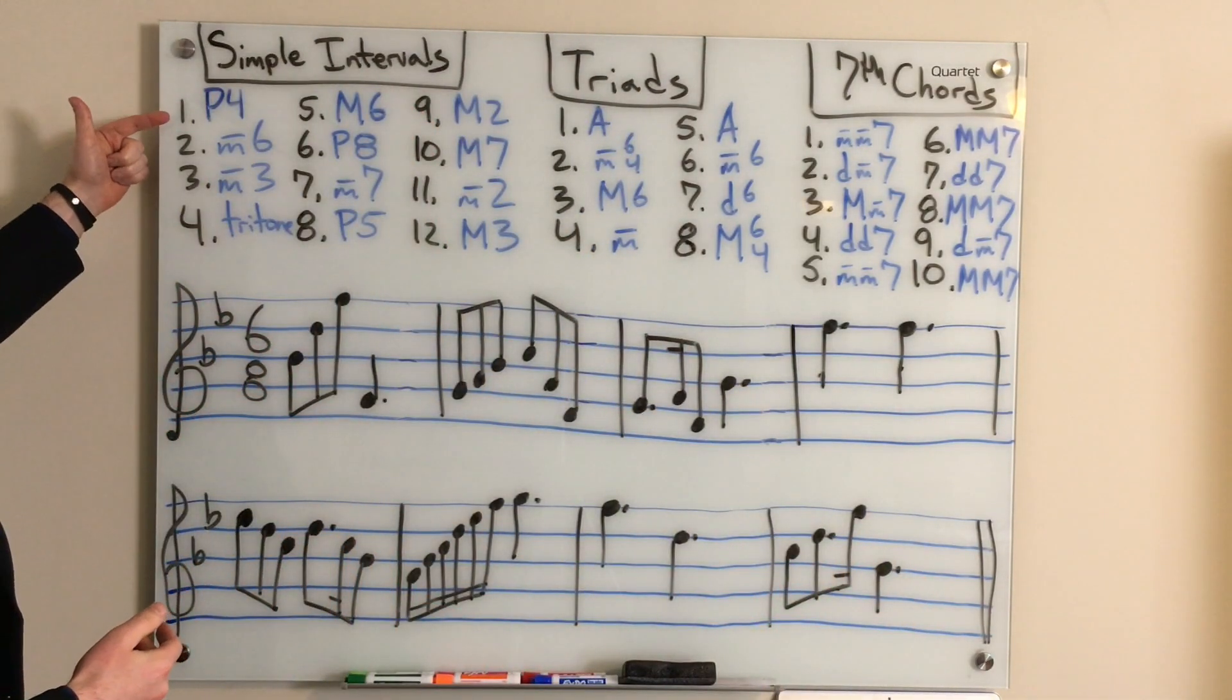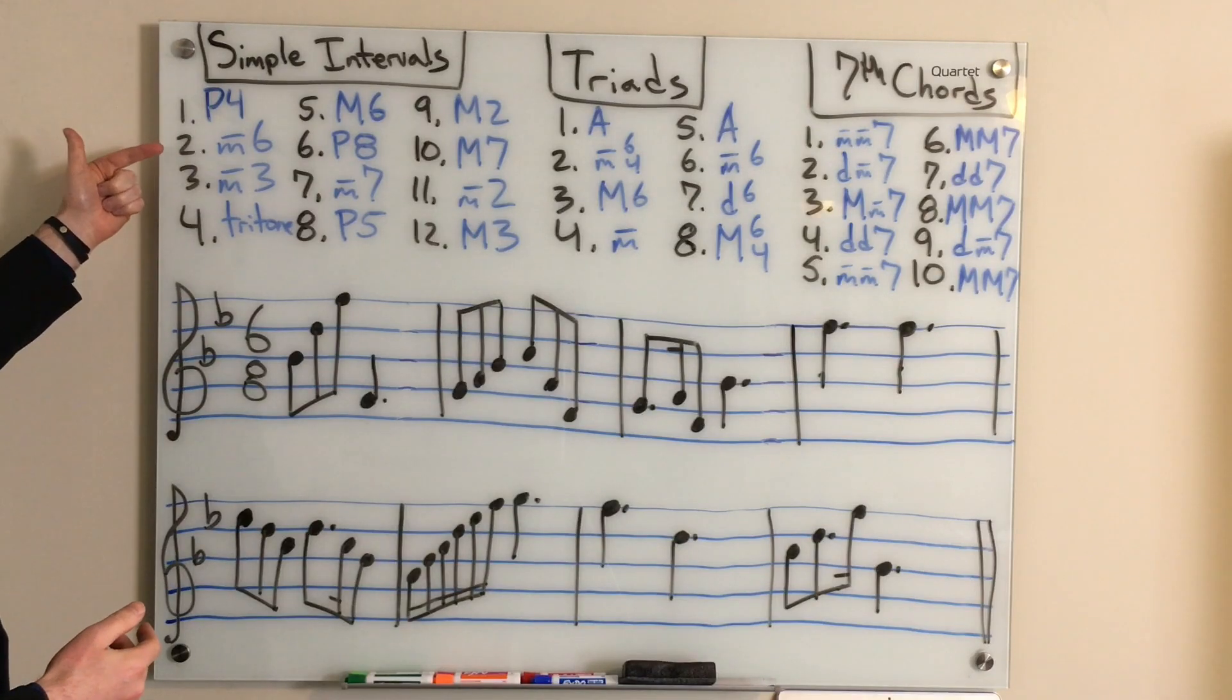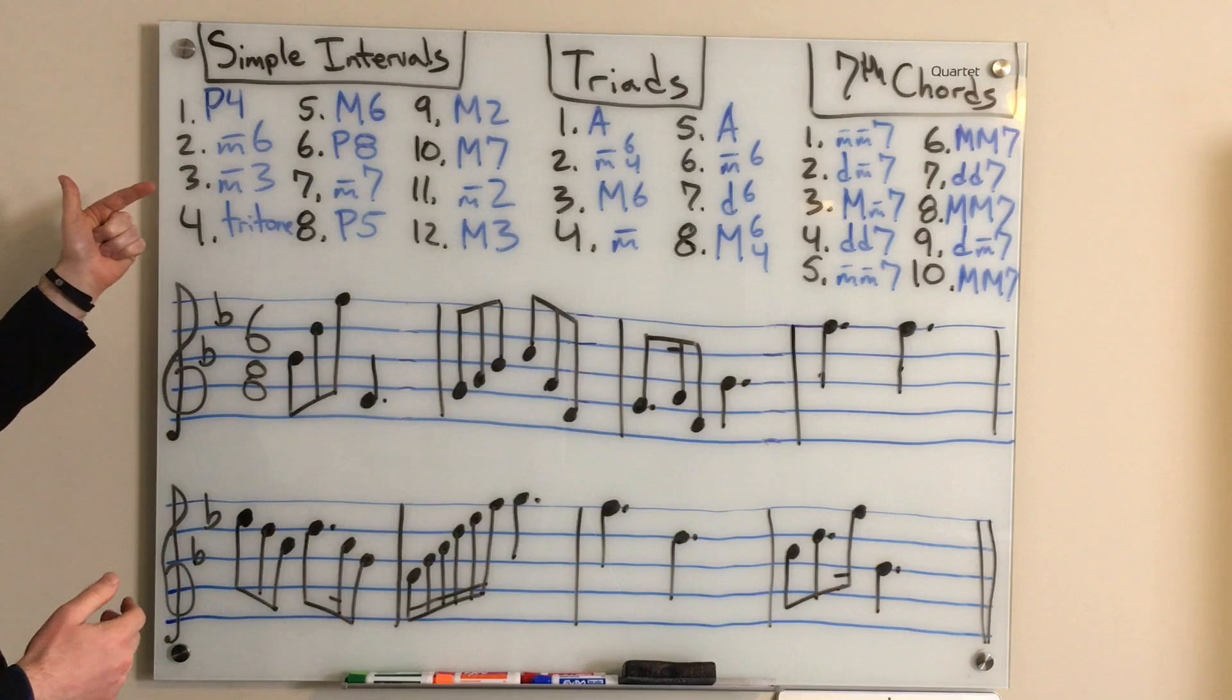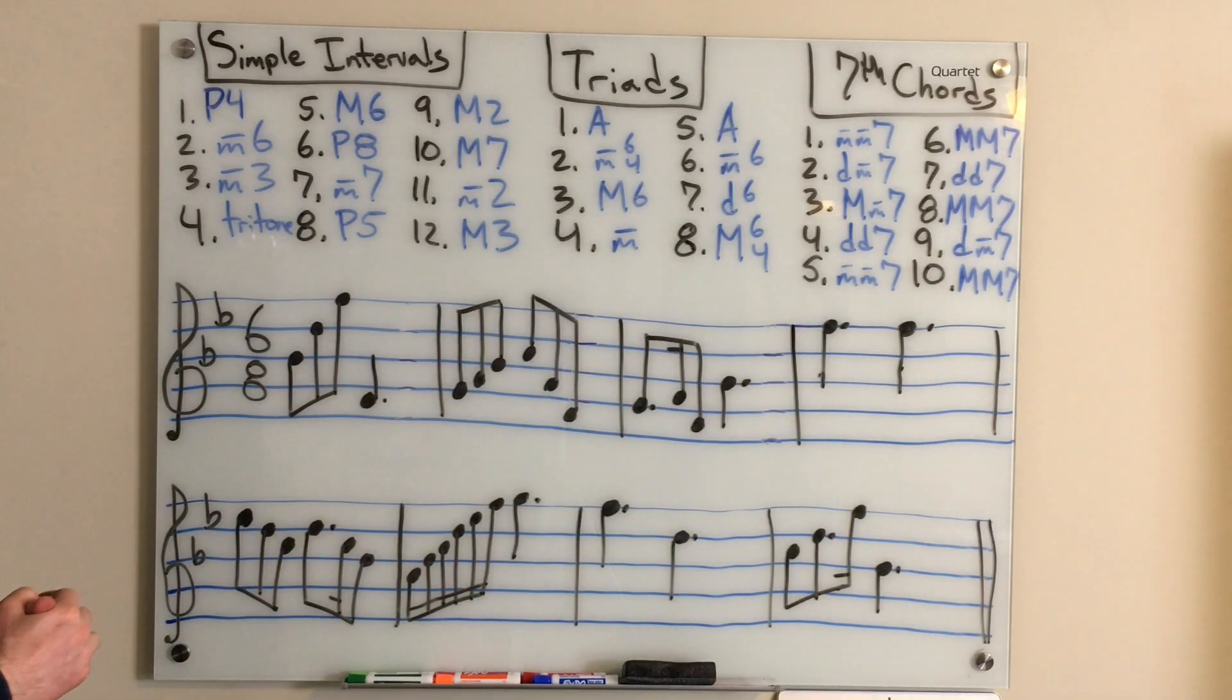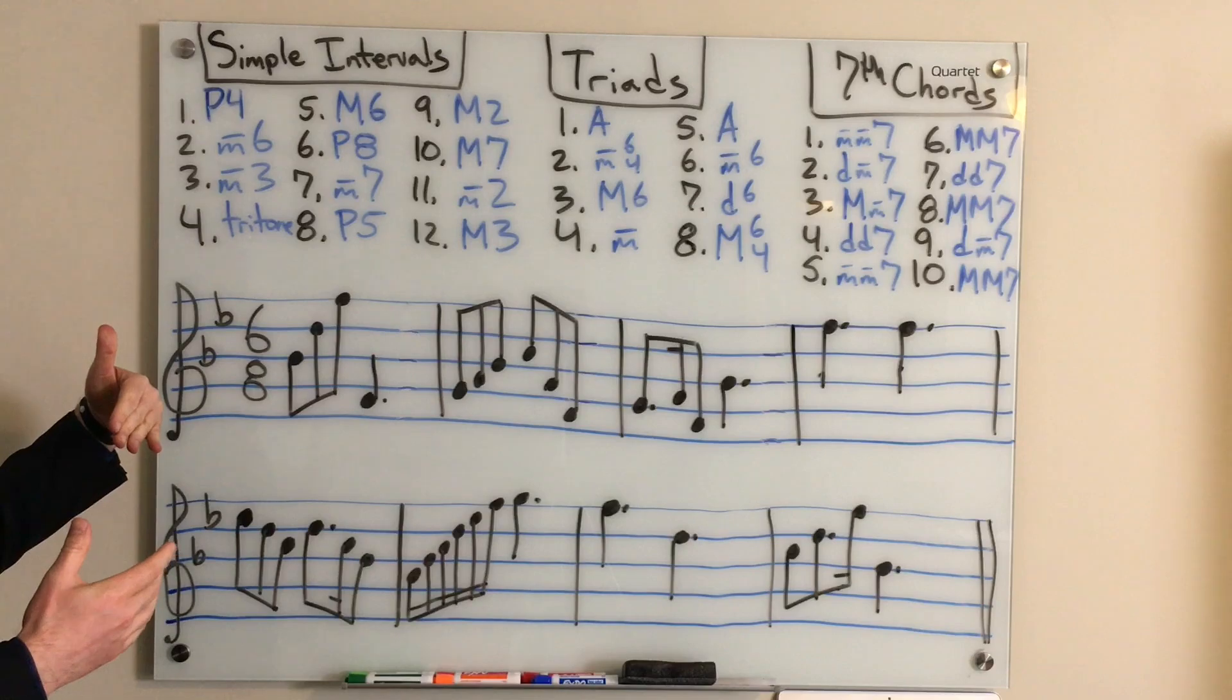Simple intervals. Number 1 was a perfect 4th. Number 2 was a minor 6. Number 3 was a minor 3rd. And number 4 was a tritone.